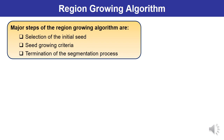The major steps of the region growing algorithm are three. First is the selection of the initial seed point for the given image. Second is the seed growing criteria — the basis on which that seed is grown. Third is the termination of the segmentation process, which is also very important. The algorithm continues for a number of iterations, so when to stop must be selected very carefully.